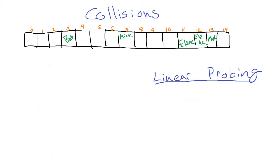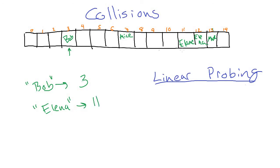If we look up Bob, we put Bob through the hash function, get out the number 3, look in slot 3, and return that data — simple. But if we search for Elena, that gives us index 11, and we go to slot 11. We can't just assume that slot 11 is the right data and return whatever is there — we have to verify that slot 11 actually contains Elena, which in this case it doesn't.